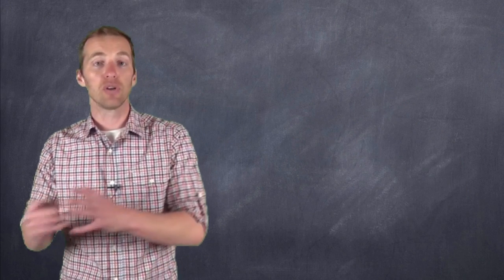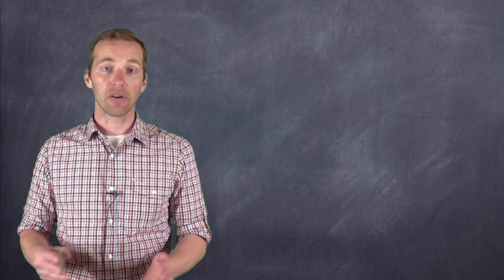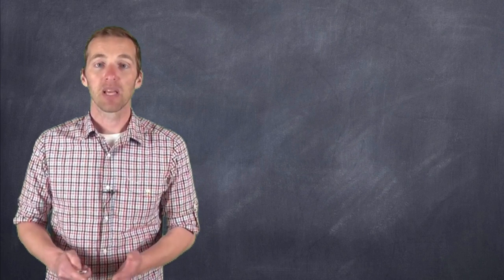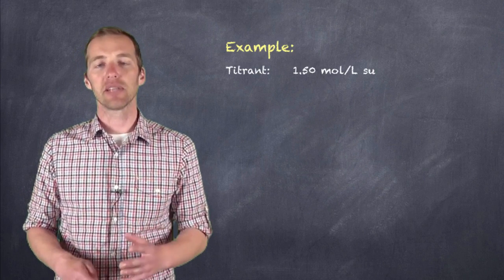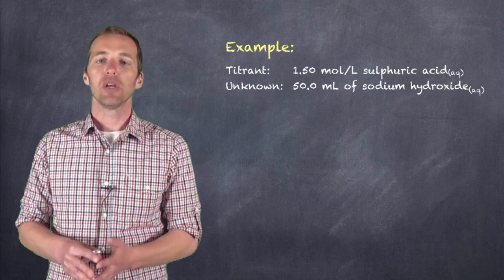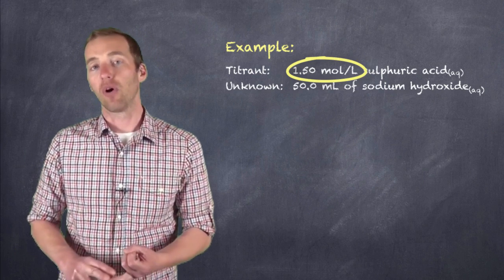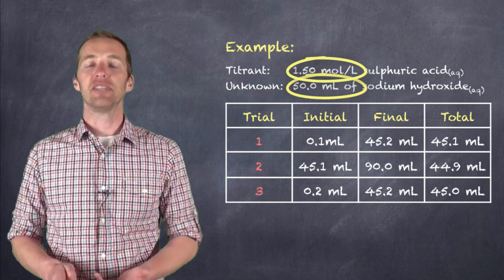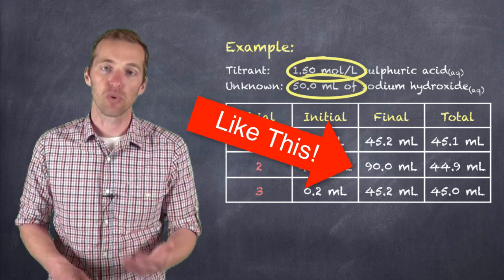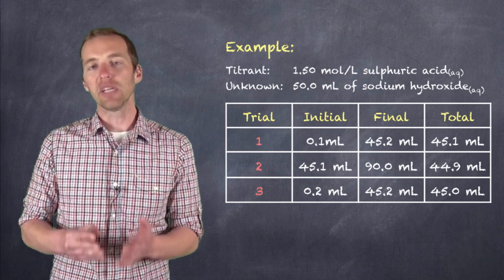Now before I leave you so that you can go off and practice these calculations for titrations, let's take a look at how we would approach an example. And typically in an example you'll be given the concentration of the titrant, you'll be given the volume of the unknown that you have, and then you'll be given a set of data in regards to the trials that were performed.